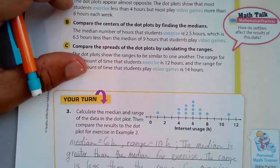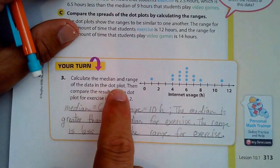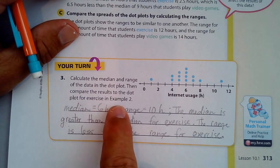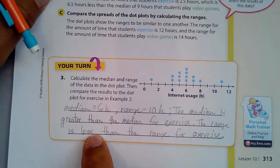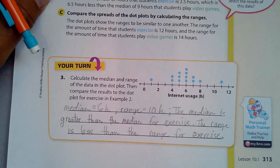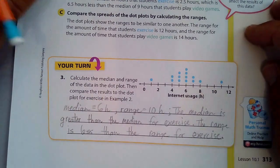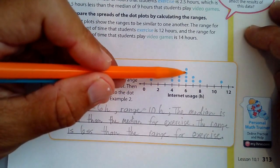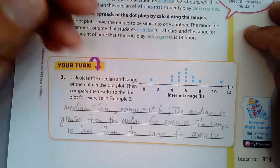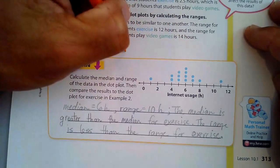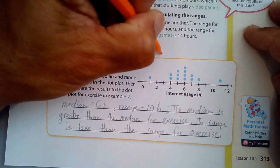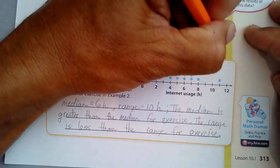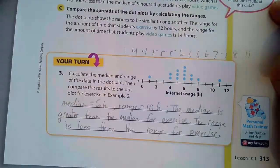On this last Your Turn exercise, calculate the median and range of the data of the dot plot. Then compare the results of the dot plot to the exercise in example 2. For exercise. The median is 6. We can see here somewhere around here is the middle number 6. What you have to do is you have to put 1, 4, 4, 5, 5, 5, 6, 6, 6, 7, 7, 8 and 11. You line them all up. I'm getting all these dots here as that data.